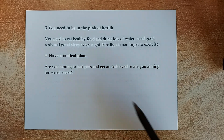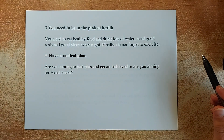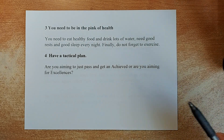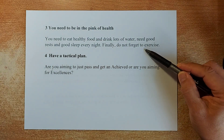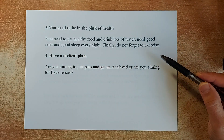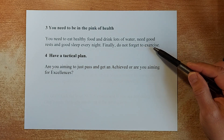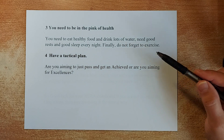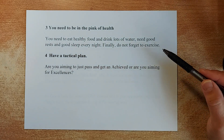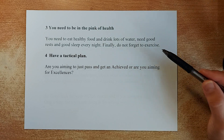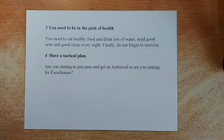Tip number 3: You need to be in peak health — you must always be healthy. Eat healthy food like sandwiches, nuts, and fruits, and drink lots and lots of water. You also need good rest and good sleep every night. And finally, you still need to exercise to keep yourself healthy — your brain works better when you exercise.